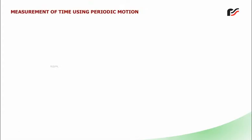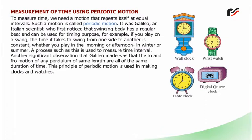Measurement of time using periodic motion: To measure time, we need a motion that repeats itself at equal intervals — this is called periodic motion. It was Galileo, an Italian scientist, who first noticed that a swinging body had a regular beat and could be used for timing. For example, a swing takes constant time to move from one side to another regardless of the time of day or season. Galileo also observed that the to-and-fro motion of pendulums of the same length are all of the same duration. This principle of periodic motion is used in making clocks and watches.